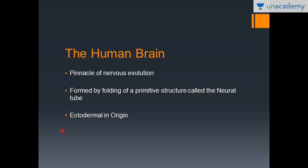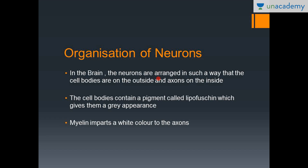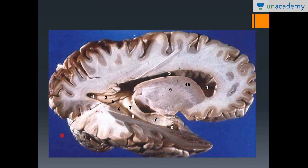The neurons in the brain are arranged such that the cell bodies are on the outer surface and the axons are on the inner surface. The cell bodies contain a pigment called lipofuscin, which imparts a grayish tinge to the neurons — this is why the outer surface is known as gray matter. The inner surface is known as white matter because myelin imparts a white color to the axons.